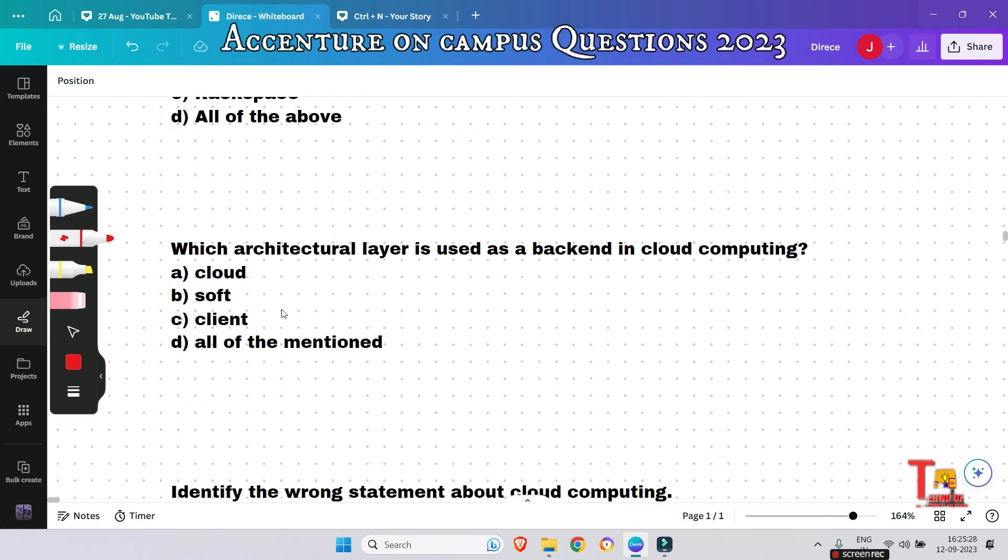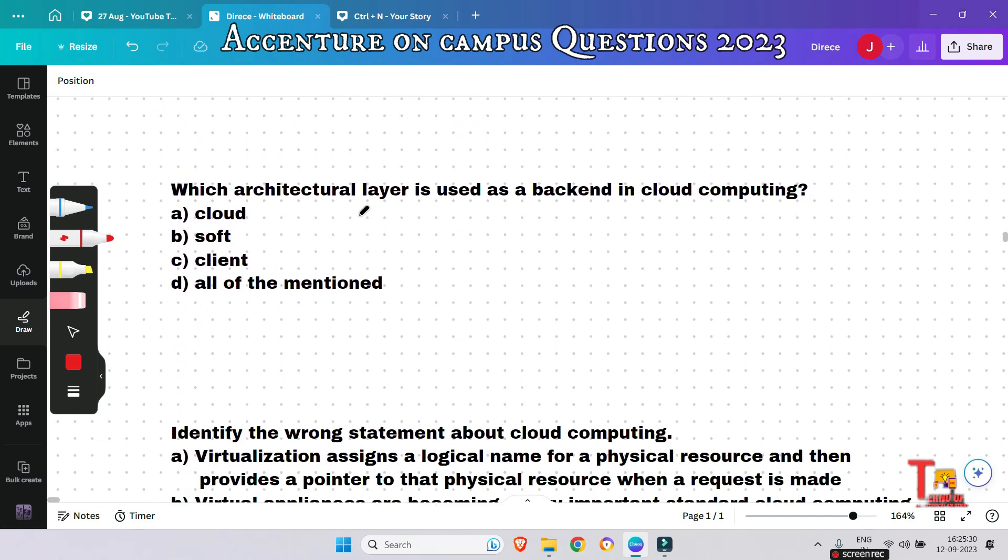The next question is: Which architectural layer is used as a backend in cloud computing - Cloud, Soft, Client, or All of the mentioned? The answer will be option A. The cloud creates a system where resources can be pooled and partitioned as needed. So the architectural layer is Cloud.